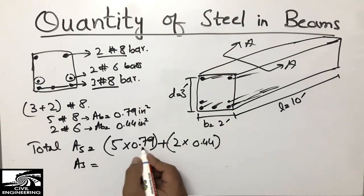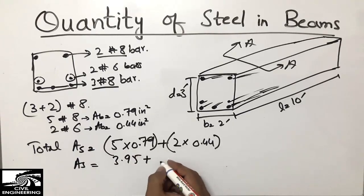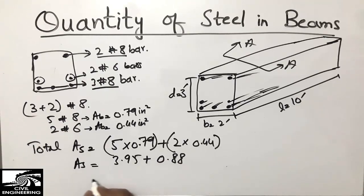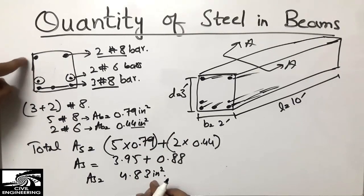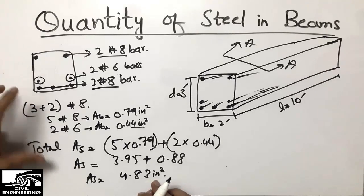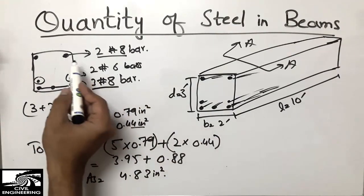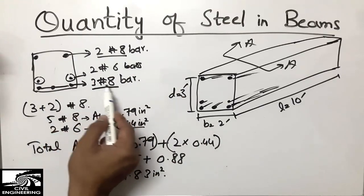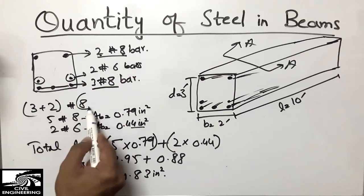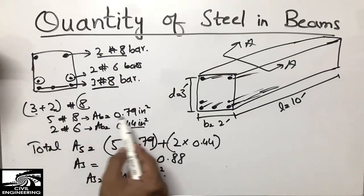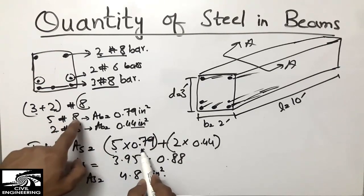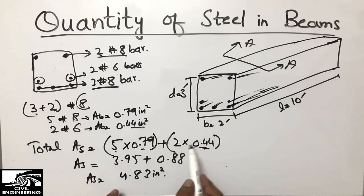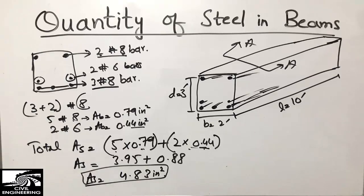The total area of steel equals five number-8 bars times 0.79 plus two number-6 bars times 0.44. That gives us 3.95 plus 0.88, so the total area of steel is 4.83 inch square. This is the method: identify how many bars of each number are used, multiply by their individual areas, then add them together.